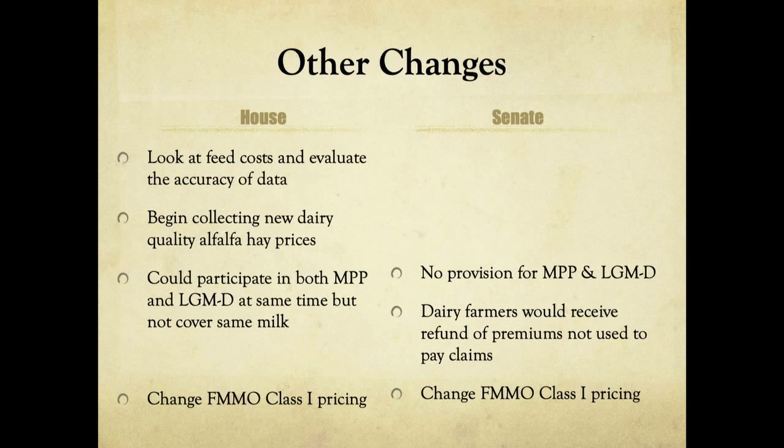Both the House and Senate versions would change the federal milk marketing order formula for Class I pricing. Currently, Class I is priced off the higher of Class III or Class IV skim solids. Both bills would change this to the average of Class III and Class IV plus 74 cents per hundredweight — historically revenue neutral but making it easier for processors to manage basis risk, since they no longer have to guess whether Class III or Class IV will be higher.